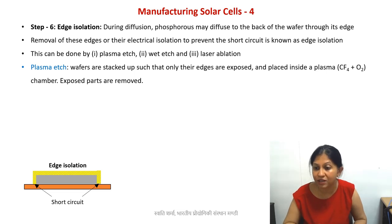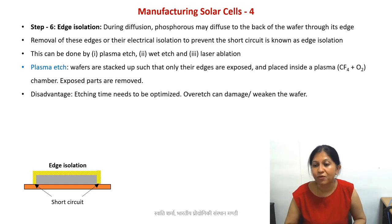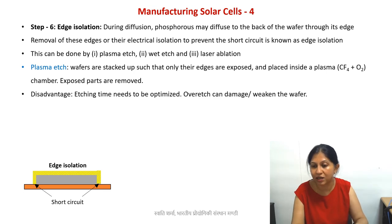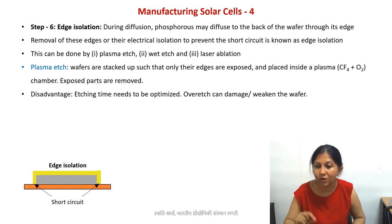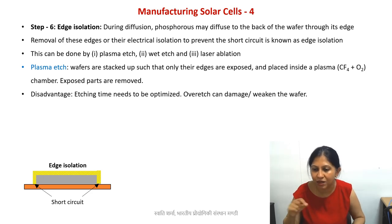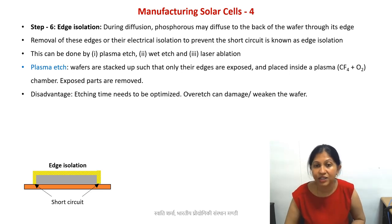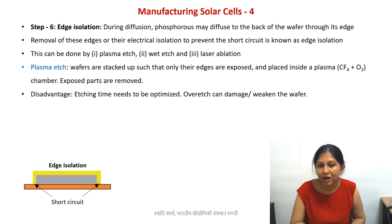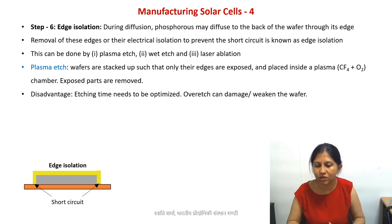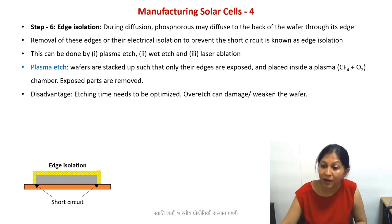One disadvantage of plasma etching is that you need to very carefully optimize the etching time. Under-etching means you will still have n-doped material causing a short circuit. However, even slightly over-etching will mechanically weaken your wafer — it can create micro-cracks from the sides, which you don't want. Remember, this is a very thin layer; the n-layer is relatively thin, and on the sides the dopant exposure is not as much. So you have a really thin layer and need to carefully optimize the plasma etching time accordingly.